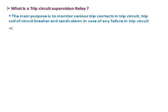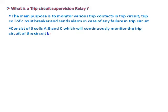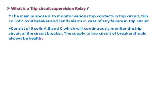It consists of three coils A, B and C, which will continuously monitor the trip circuit of the circuit breaker. The supply to the trip circuit of breakers should always be healthy to trip the circuit breaker in case of any fault.